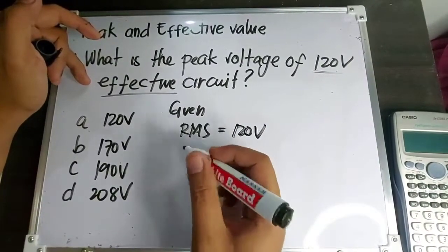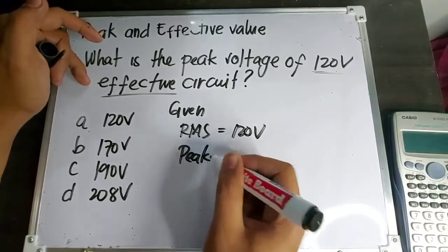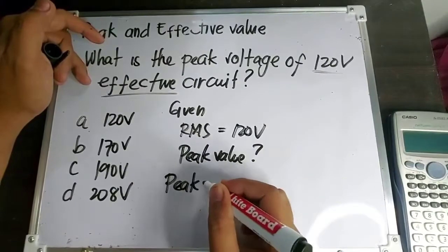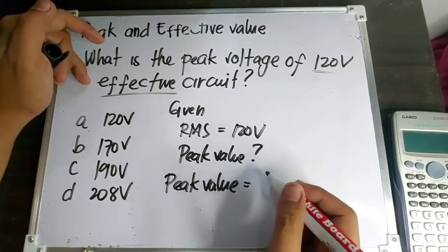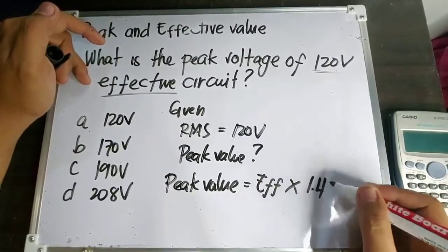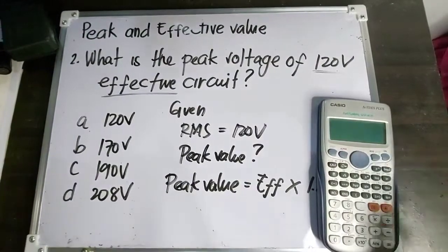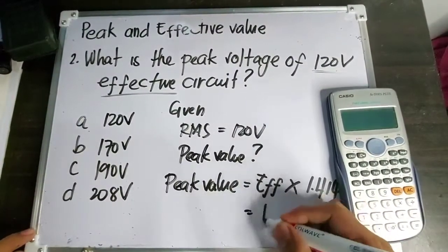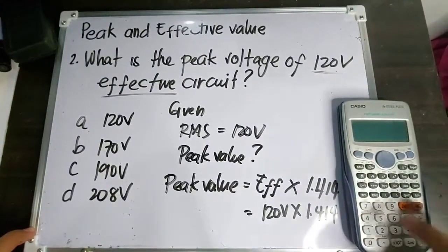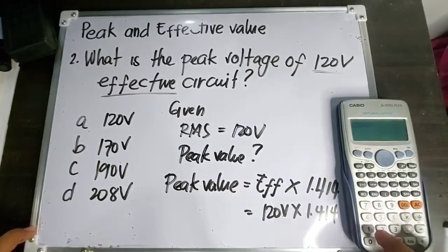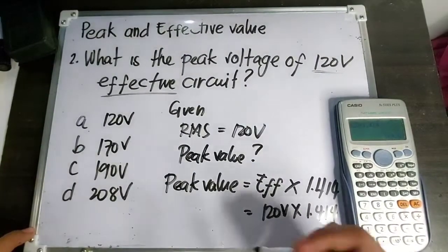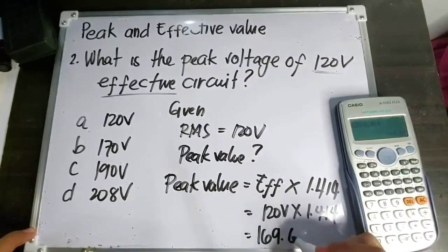Ang hinahanap is yung peak value or maximum value. Yung formula natin kanina para makuha yung peak value: ito ay equal sa effective value times 1.414. So, 120 volts times 1.414. 120 times 1.414 equals 169.68. So the answer is 169.68 volts.